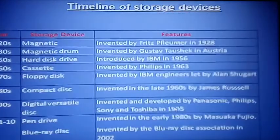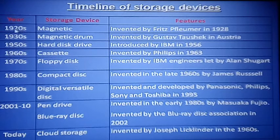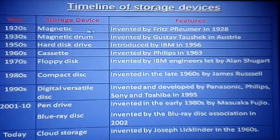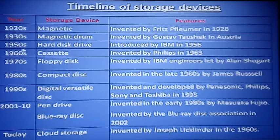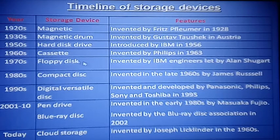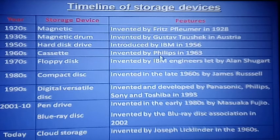Now let's look at storage devices and their history. In 1928, the magnetic tape was invented. In 1928–1930, the magnetic drum was invented in Austria. In the 1950s, the hard disk was developed — an important point: the hard disk was developed by IBM in 1956. After that came cassettes, and in the 1970s, the floppy disk was developed, also by IBM.